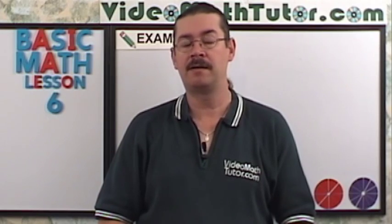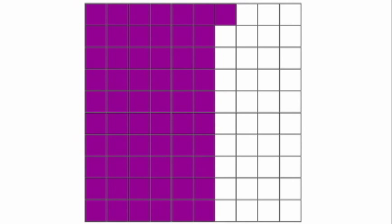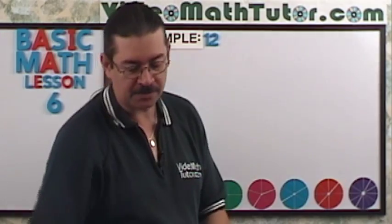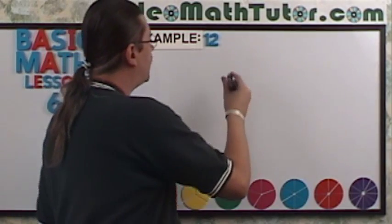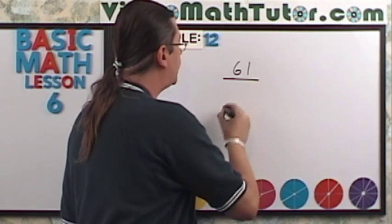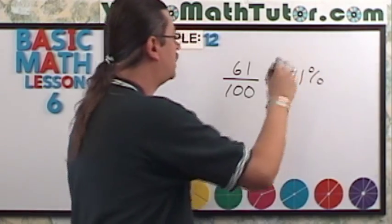For example 12, I'd like to express this graph as a percentage. Let's give it a shot. Well, what's going on here? If you notice carefully, there was 61 total shaded squares out of 100. So it's just going to be 61%.